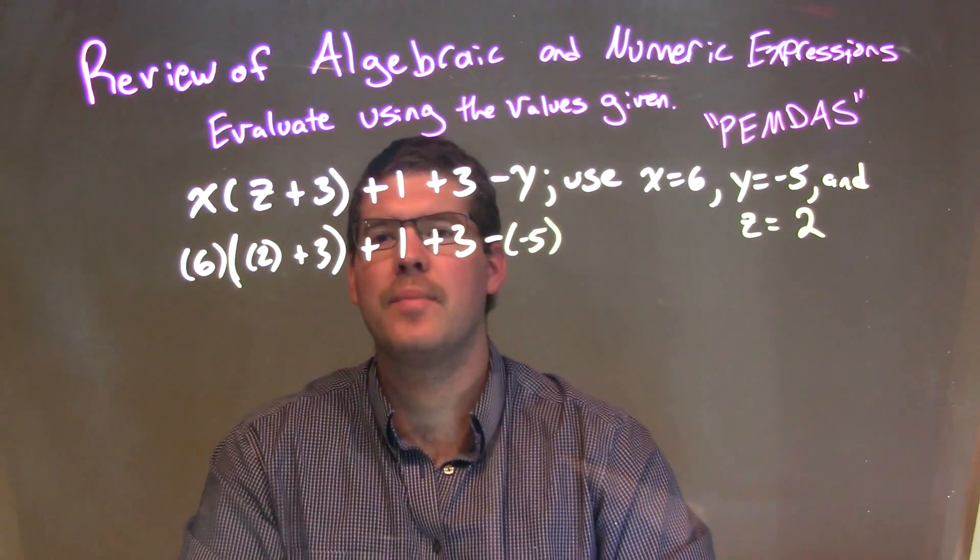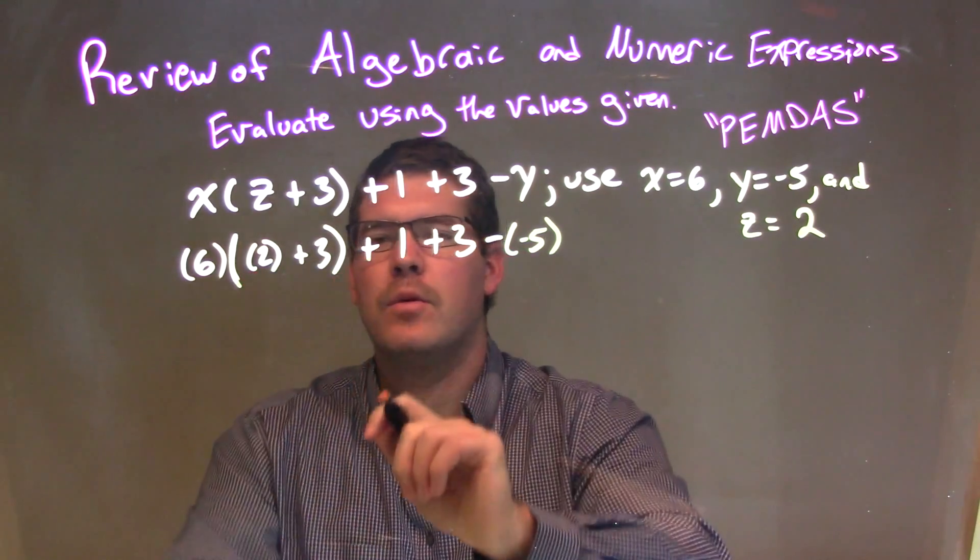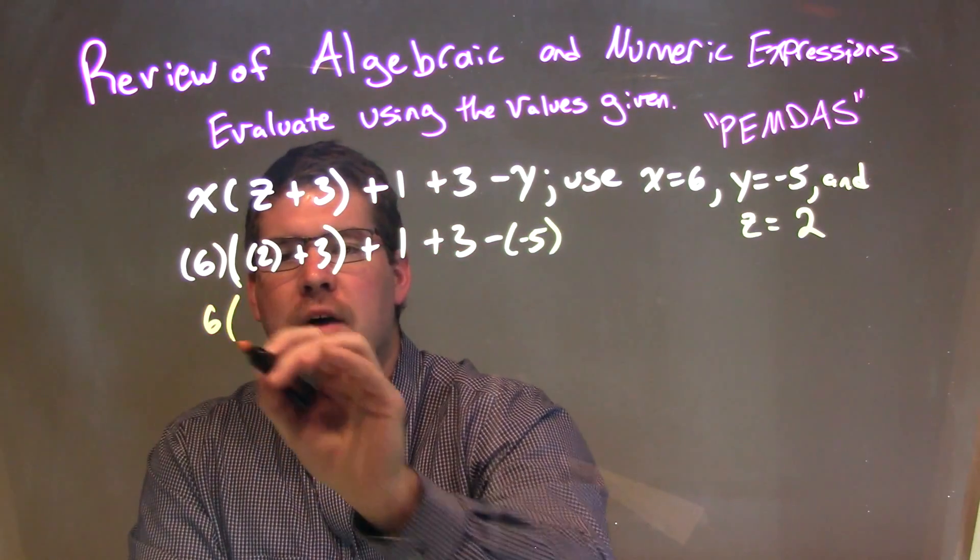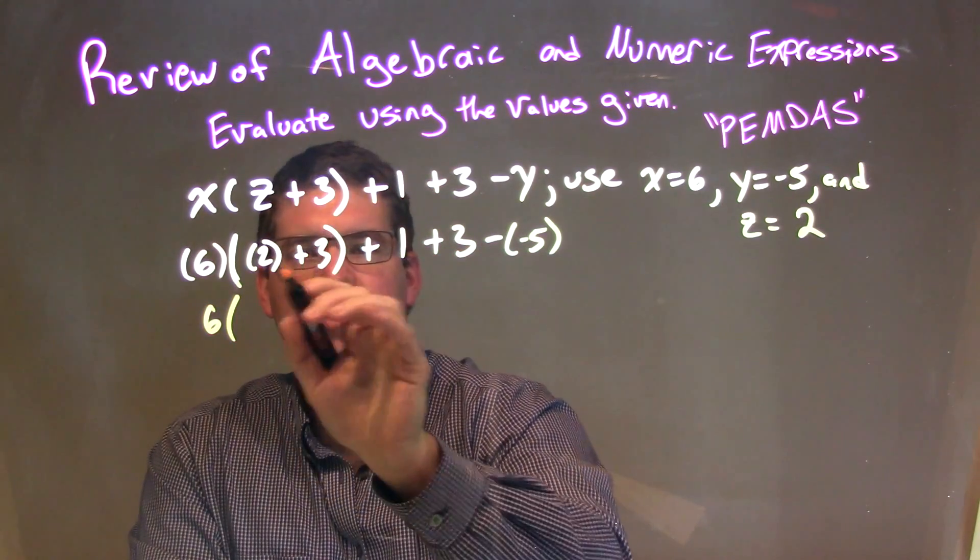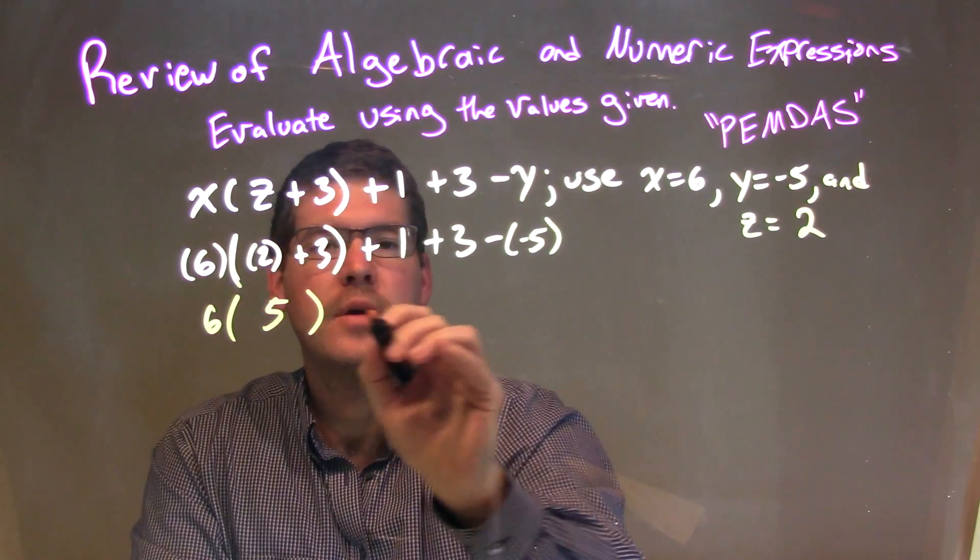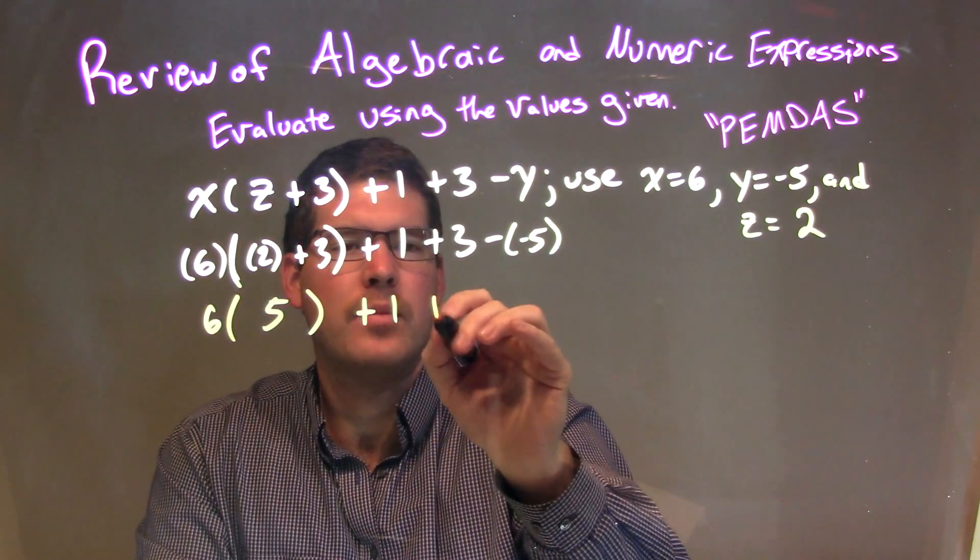So, now I've eliminated all of my variables by substituting a corresponding number for each one. So, now it's time to simplify. Well, inside my parenthesis, I have to deal with that first. So, the 6 stays on the outside here, and I have a 2 plus 3. 2 plus 3 comes out to be a 5. Then, we have a plus 1, and then plus 3.